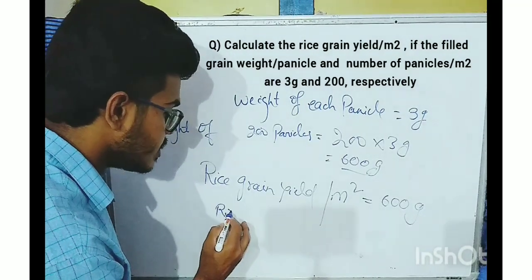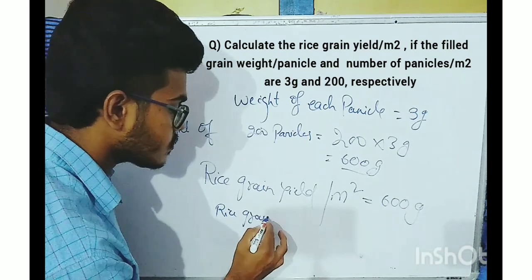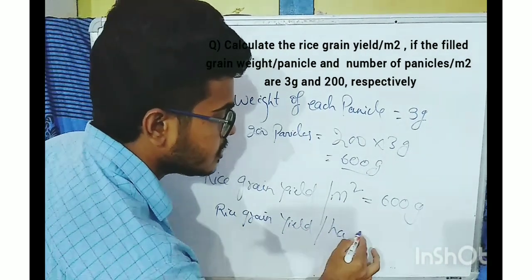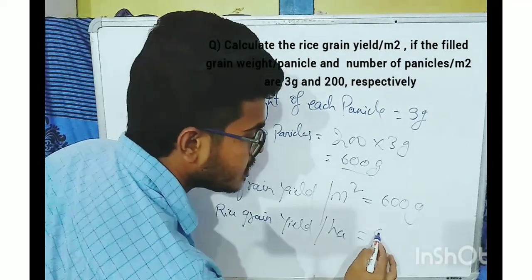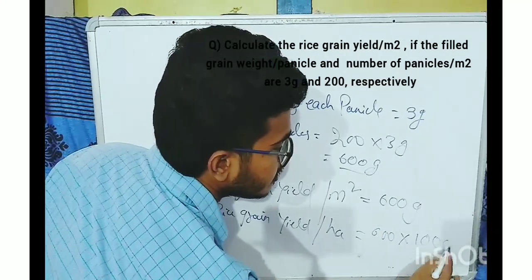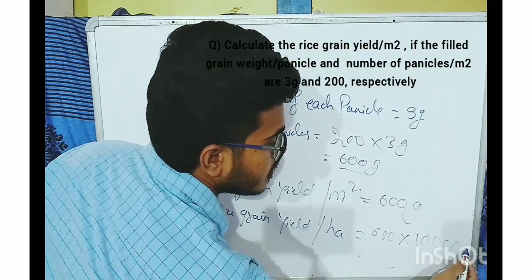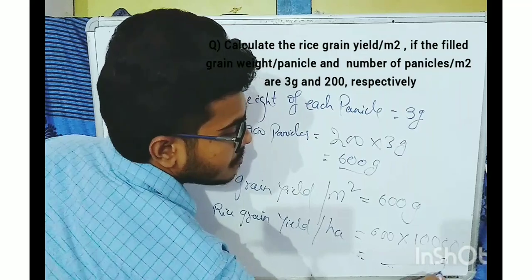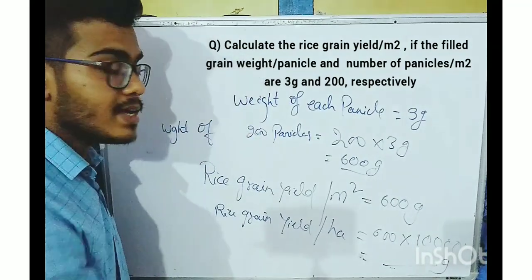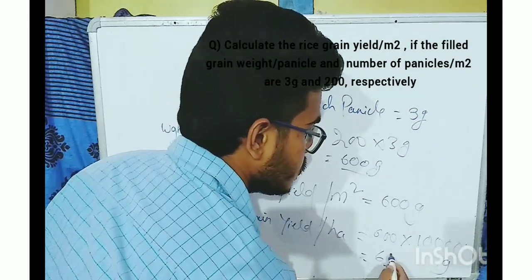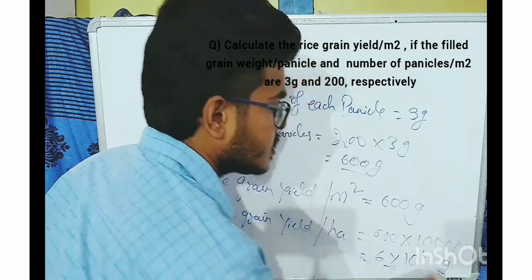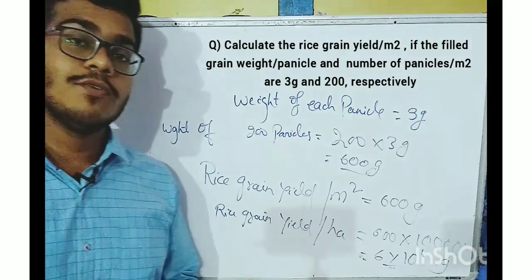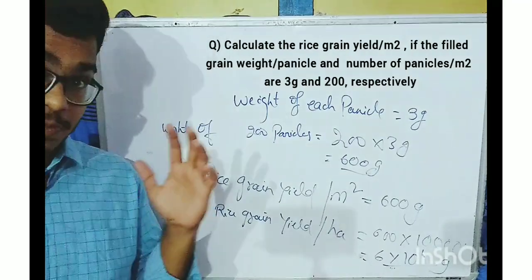To calculate the rice grain yield per hectare, we multiply the per-square-meter value by 10,000 (since 1 hectare = 10,000 m²). This gives us 600 × 10,000 = 6 × 10⁶ grams of grain yield per hectare. This is how we can calculate the expected yield of rice.